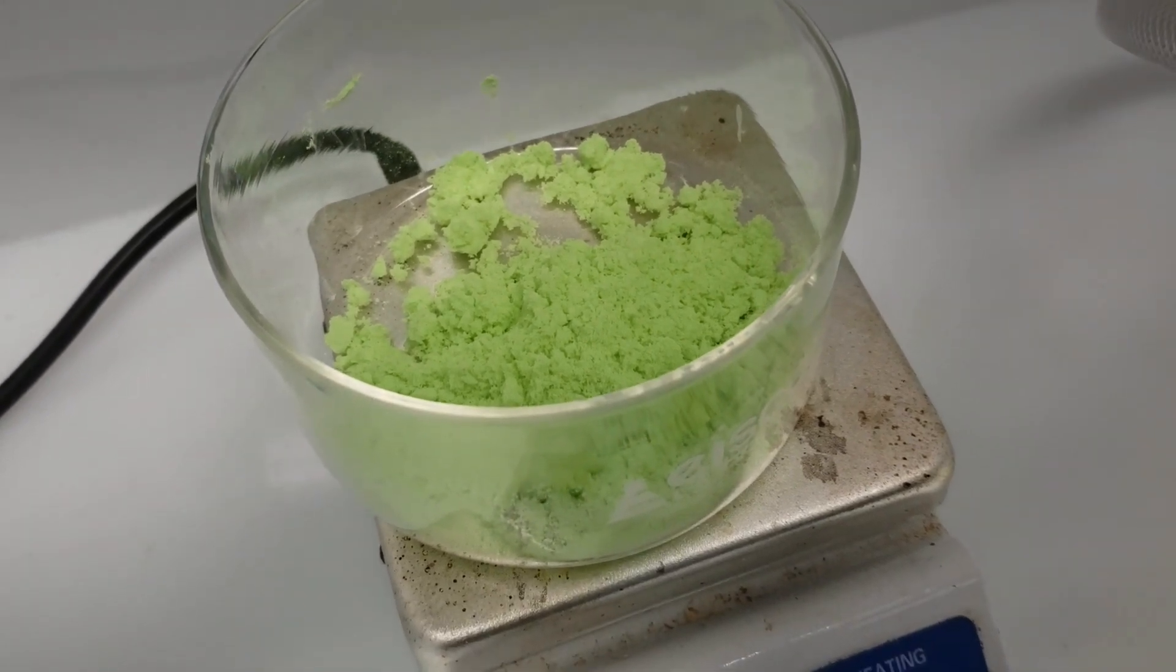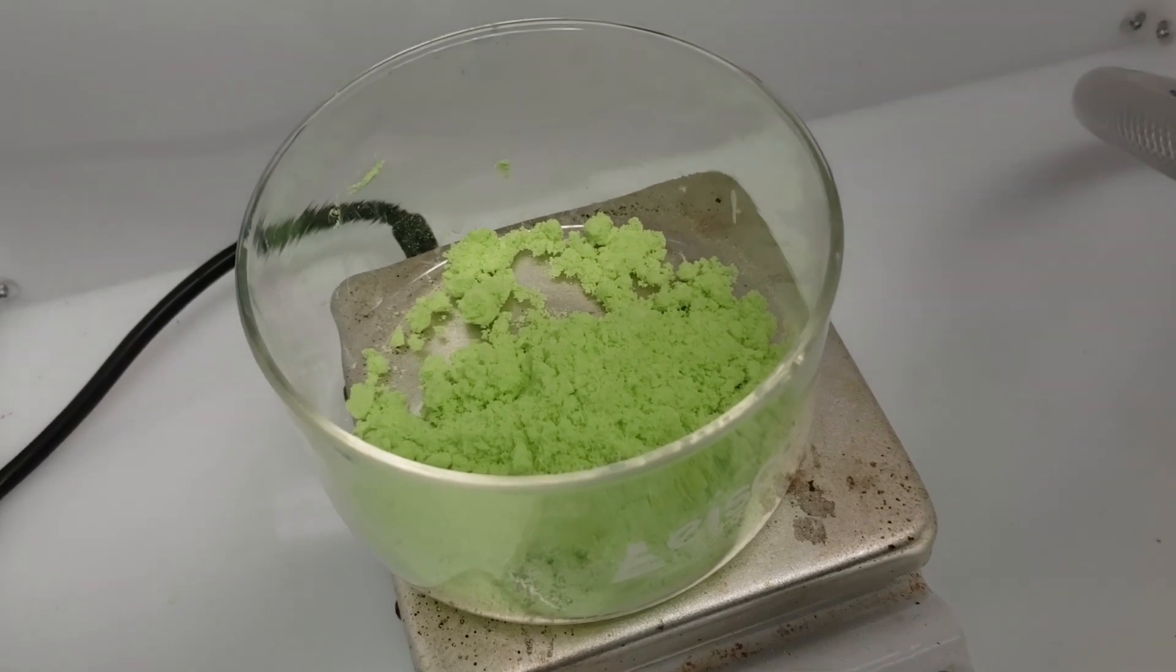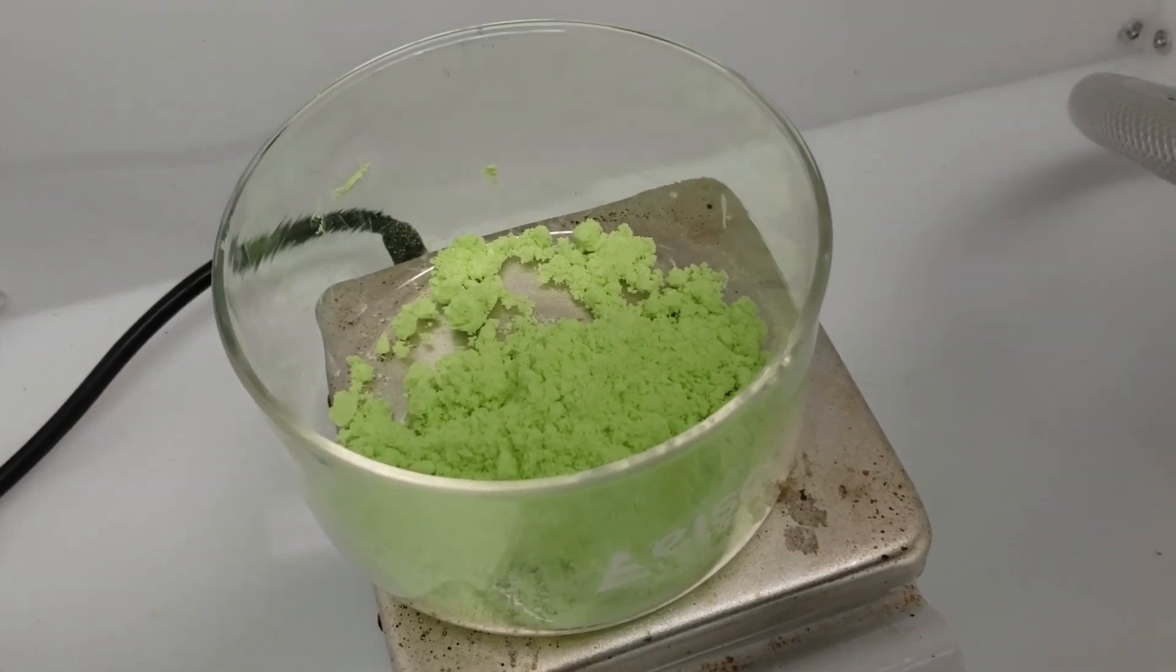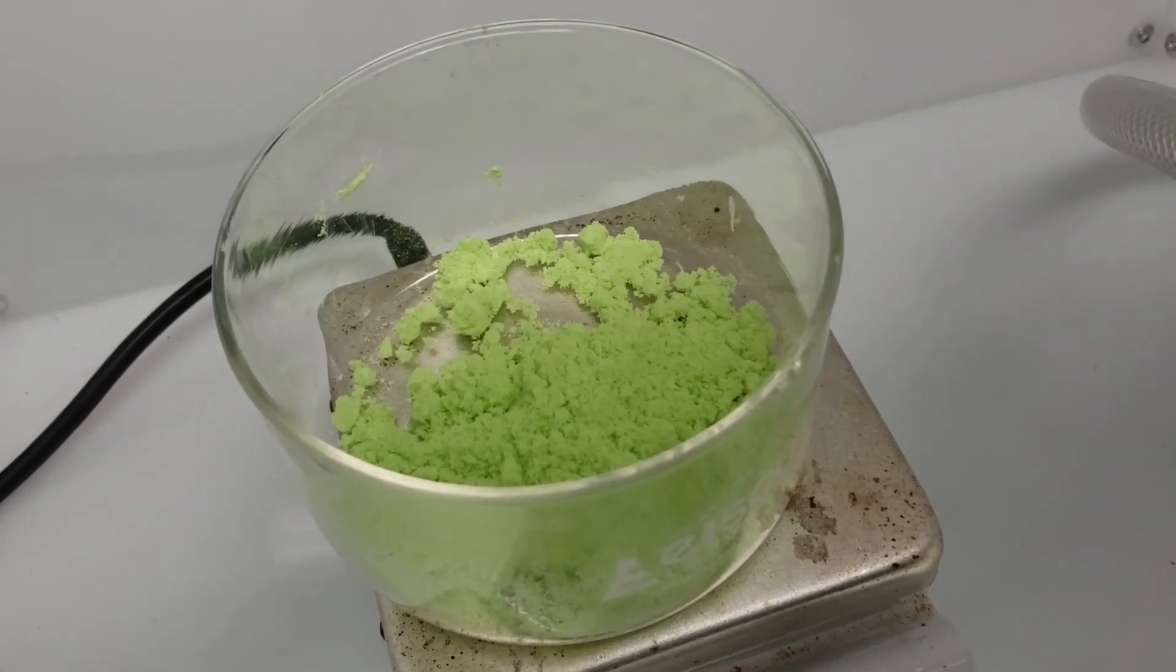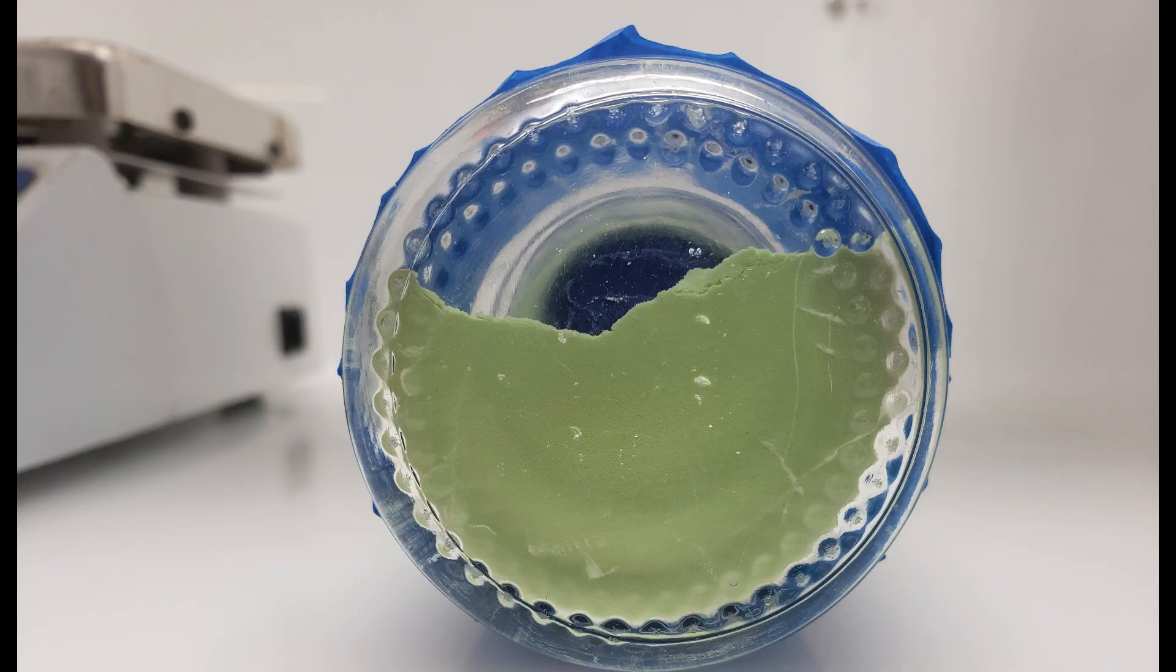I obtained 22.45 grams of a light green powder. Praseodymium oxalate actually has a number of hydrates, but the most common is the decahydrate. Thus, it's not exactly possible for me to get an exact number for the yield. Assuming the product is entirely the decahydrate, though, this is an 88.2% yield on starting praseodymium. Thanks for watching, and make sure to like and subscribe.